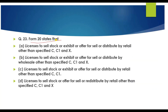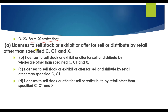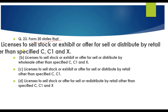Question number 23: Form number 20 states the sale of stock or exhibit or offer for sale or distribute by retail as specified in Schedule C, C1, or X. This is the correct answer.